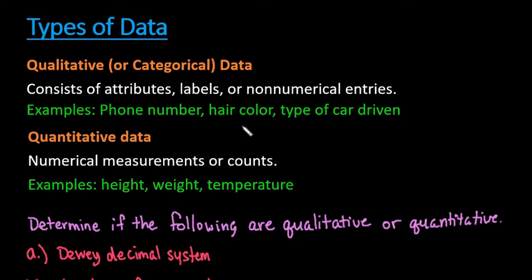So the two types of data that we deal with are qualitative data and quantitative data. Some textbooks, instead of calling it qualitative, call it categorical. The textbook that I'm currently teaching from does use the term qualitative.